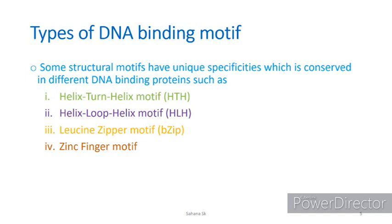On the basis of some unique characteristics, DNA binding motifs are categorized into different types such as helix-turn-helix motif, helix-loop-helix motif, leucine zipper motif, and zinc finger motif. In this video we are going to talk about the helix-turn-helix motif only, and in the next video we'll discuss the other types.